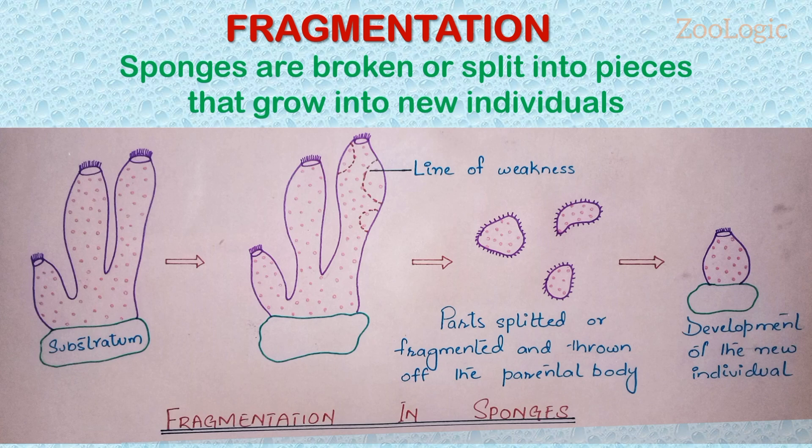In the process of fragmentation, a fragment is separated from the parent body, settles on a new substrate, and becomes an independent whole organism. As shown in the diagram, there is a line of weakness from which the part that is split away from the parent body develops into a new whole organism.